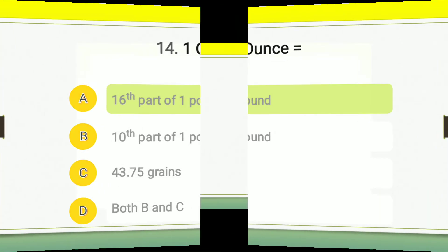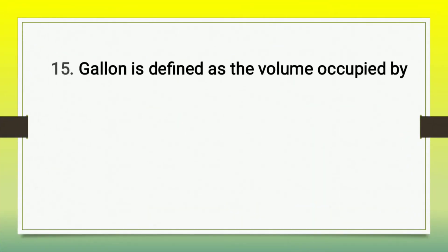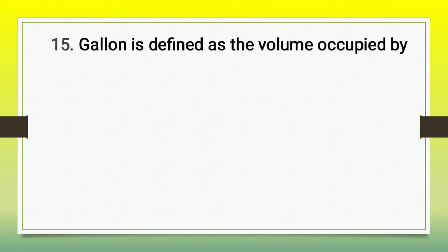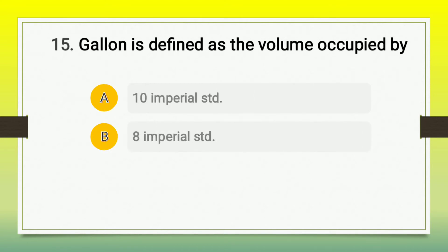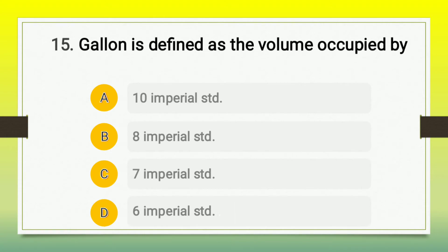Question number 15: gallon is defined as the volume occupied by — A) 10 imperial standard, B) 8 imperial standard, C) 7 imperial standard, D) 6 imperial standard. The right answer is option A, 10 imperial standard.